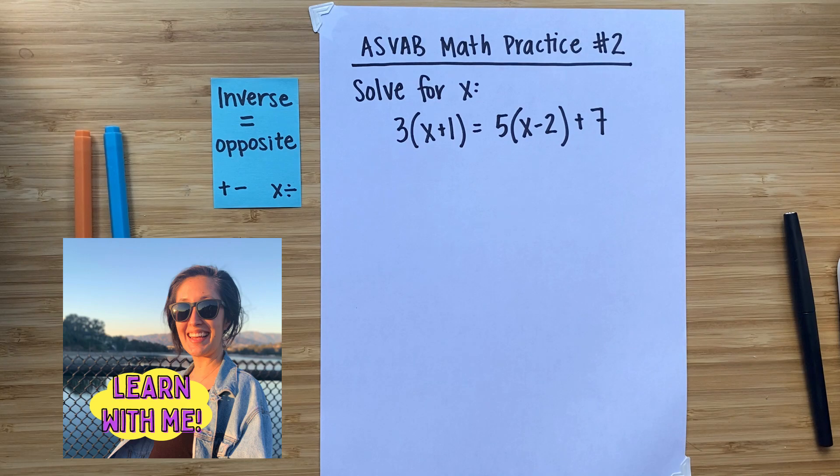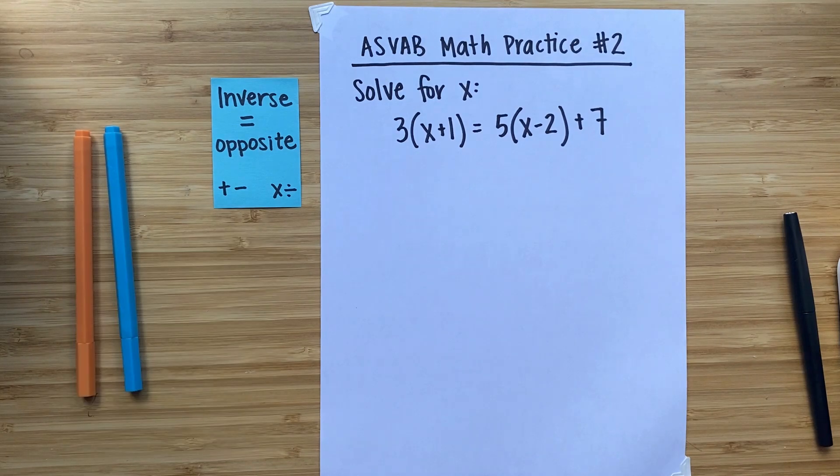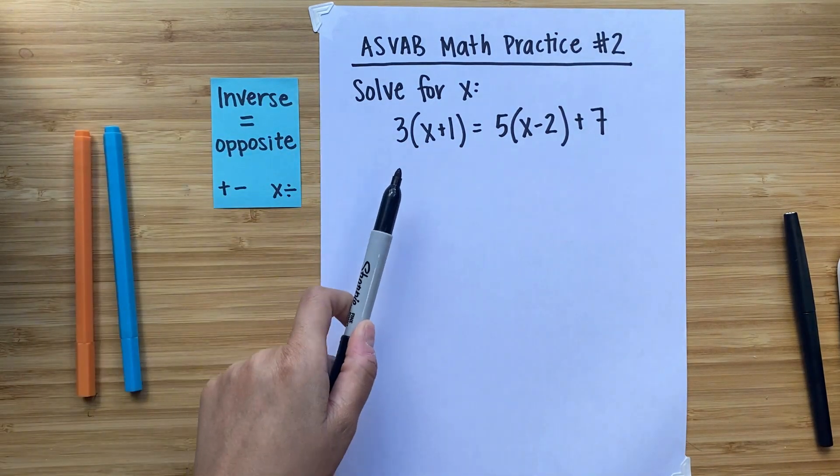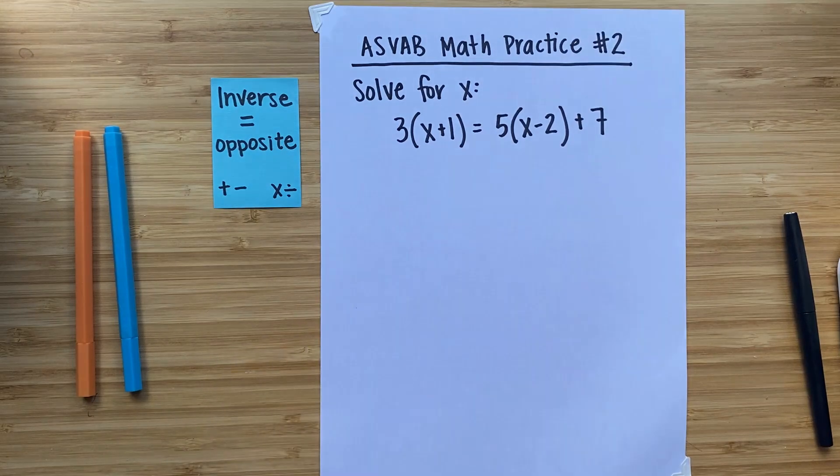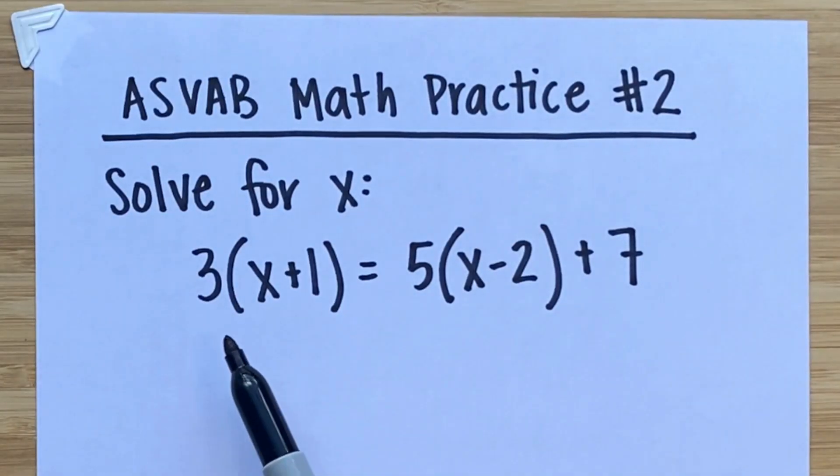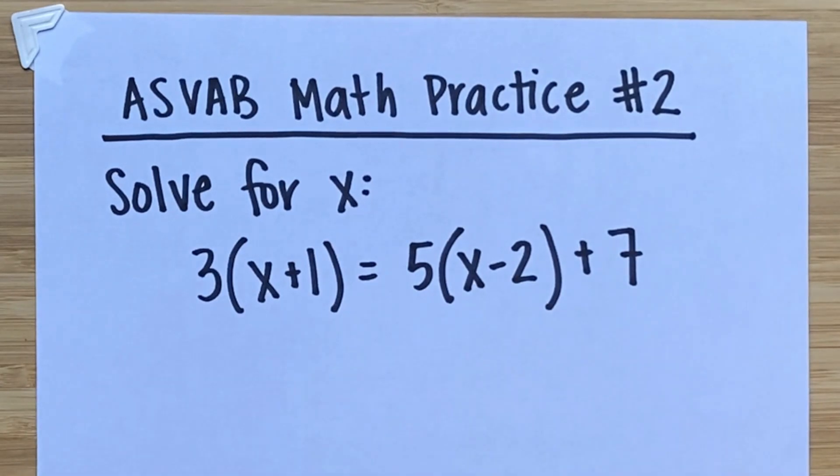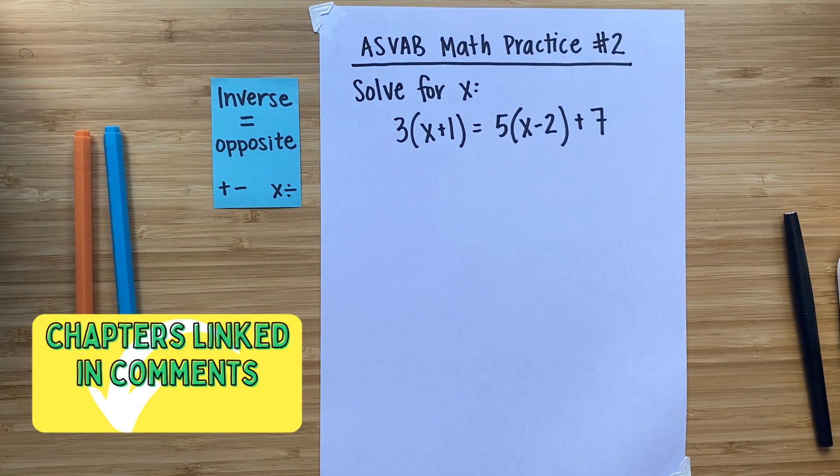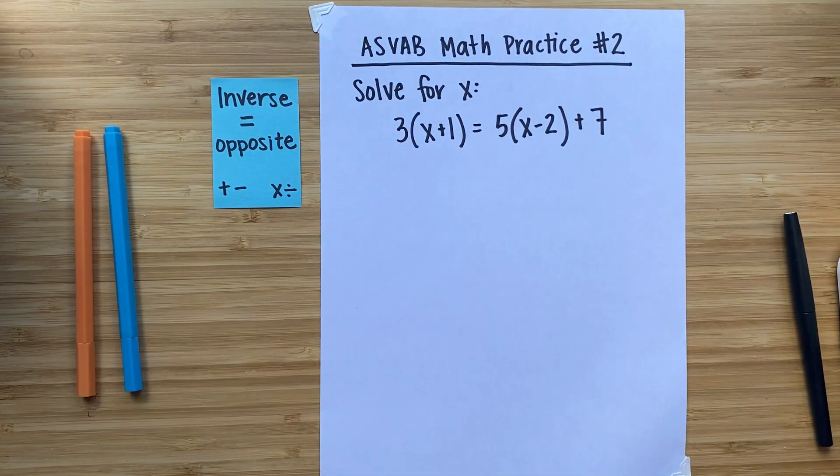Today we'll be solving ASVAB practice question number two, which is asking us to solve for x, and it's giving us an equation with multiple steps to solve. In this video, I'll walk you through how we solve for x step-by-step, show you the answer, and then provide some practice problems that you can use to check and see how well you mastered this skill.